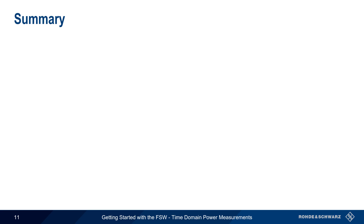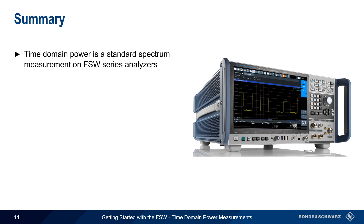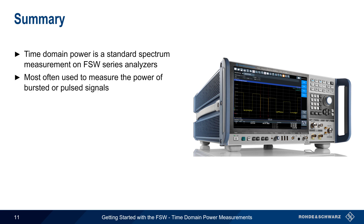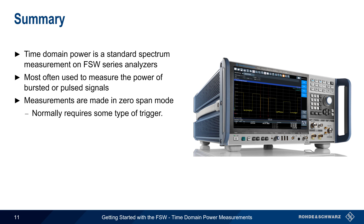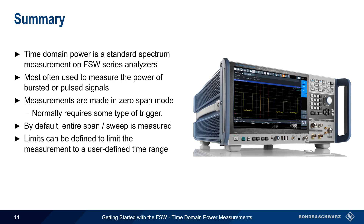Let's end with a brief summary. Time domain power measurements are standard spectrum measurements supported on all Rohde & Schwarz FSW Series Signal and Spectrum Analyzers. In most cases, time domain power measurements are used to measure the power of so-called bursted or pulsed signals, such as radar or time division duplex communication signals. Time domain power is measured in zero span mode, and like most zero span measurements, a trigger is needed to obtain a stable power measurement. By default, a time domain power measurement will measure power across the entire span or sweep, and most often limits are defined in order to measure only over a user-defined time range — for example, only measuring over the on time of a pulse.